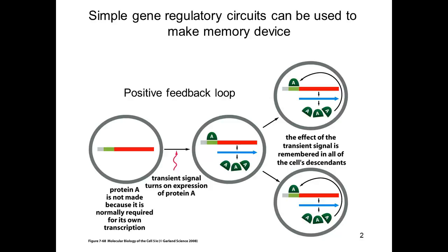We've discussed negative feedback two times already in this class — those were examples of shutting things down when there's too much of a certain material. Here, we're going to look at a positive feedback loop, and this is thought of as a memory device in a sense. What we're going to see is: if you make a little of protein A, you will continue to make it. So that's where the memory comes in.